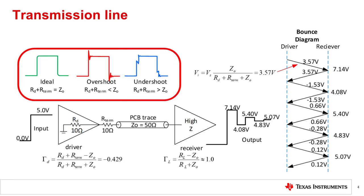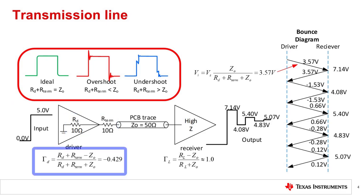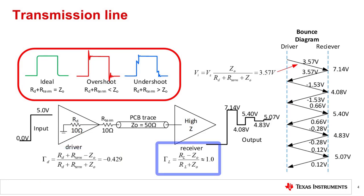A bounce diagram is a method used to calculate the transmission line reflections so that we can predict the waveform that will be delivered to the load. For this example, a 5-volt step is applied to the transmission line, and RD plus R-term is 20 ohms. The reflection coefficient, gamma, is calculated on the driver's side as minus 0.429, and on the receiver's side as 1.0. The receiver will generally have a reflection coefficient of 1.0 as it is effectively an open circuit and will completely reflect the waveform.